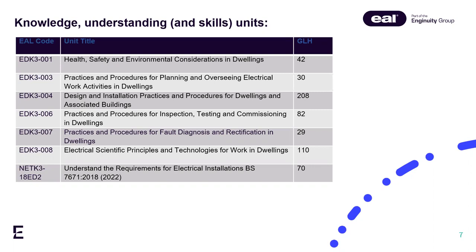Unit 3 is very similar to the current Unit 3 in the 7345 Level 3 electrotechnical qualification. It covers organising and overseeing, but the emphasis is for electrical work in dwellings. There is a slight difference to content as it has been brought up to date.